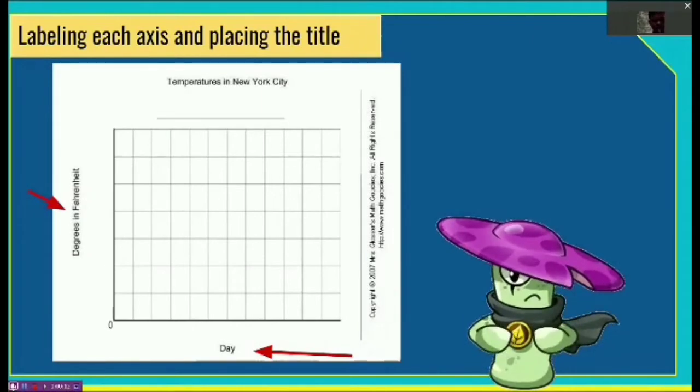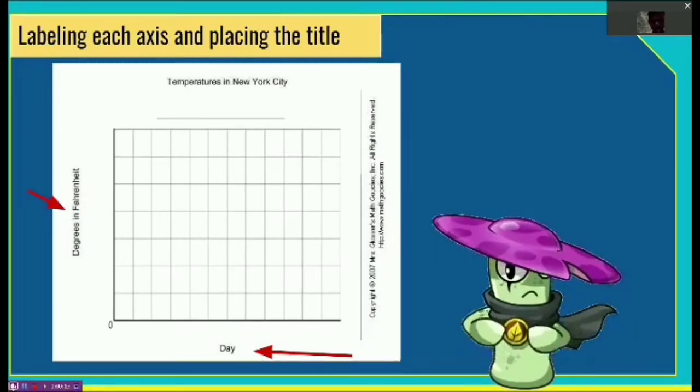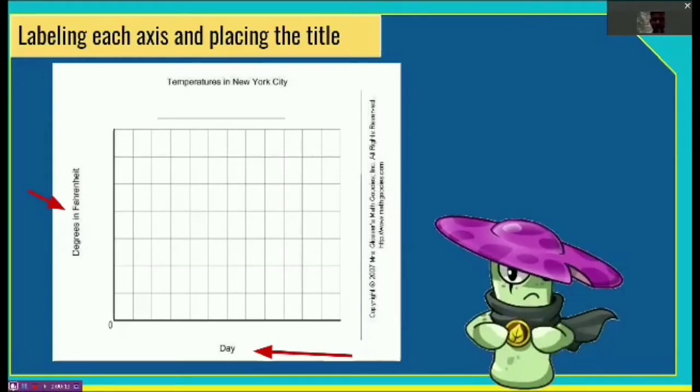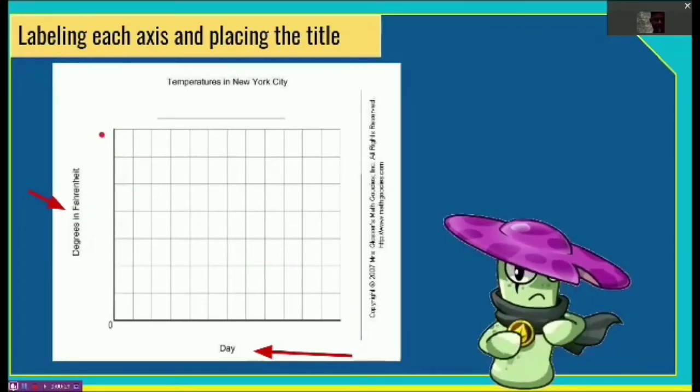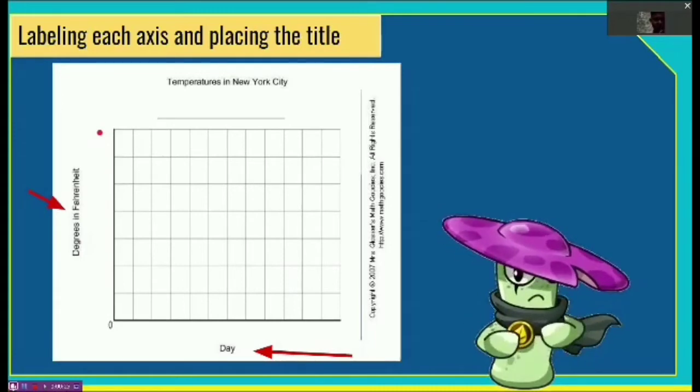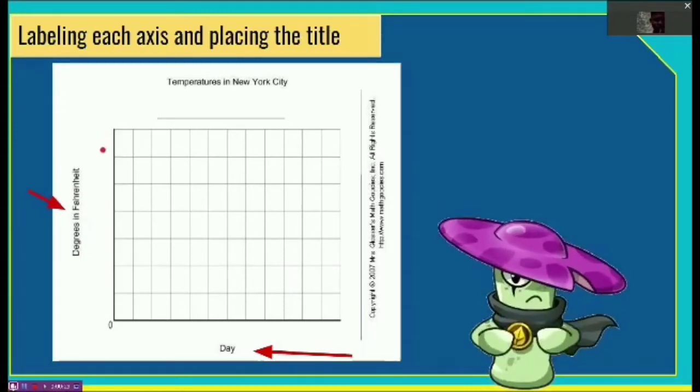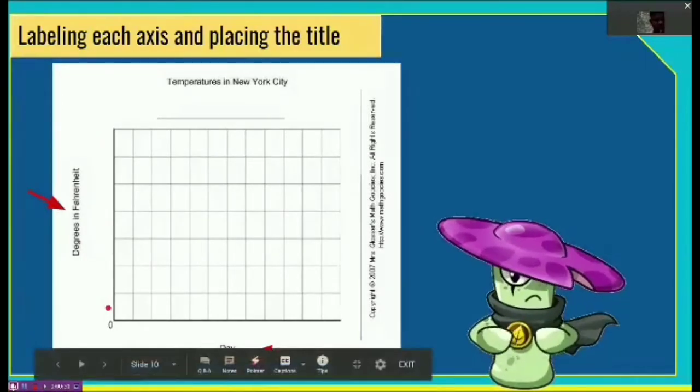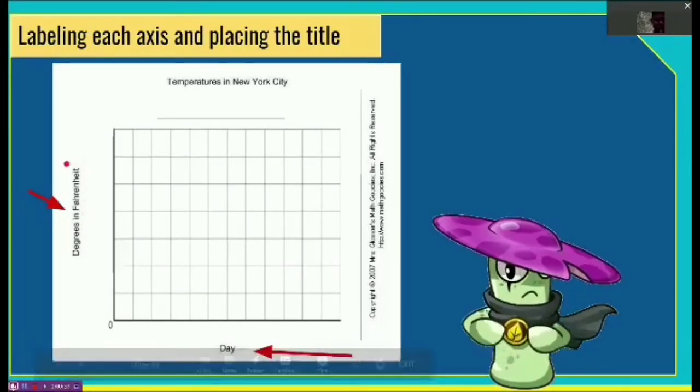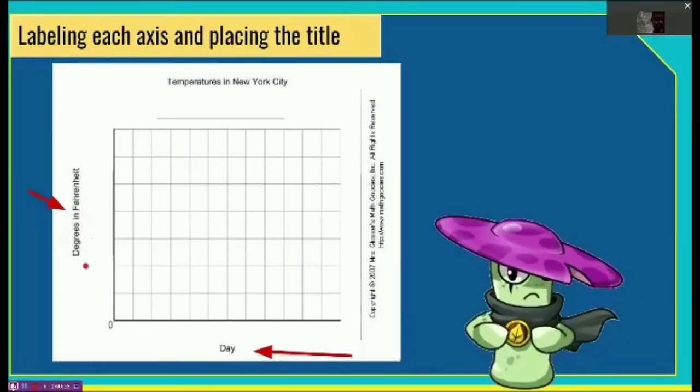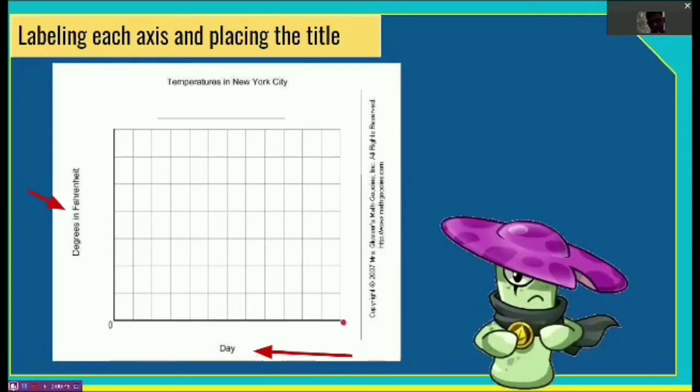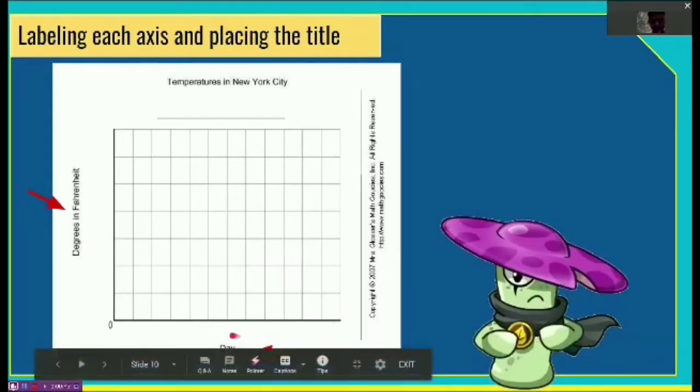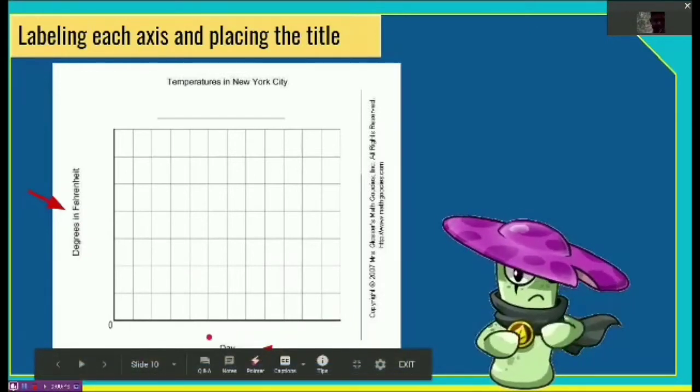In doing such, we should identify which variable the x-axis and y-axis represent. For the y-axis, as shown in my example before, it presented the dependent variables, which were the different temperatures. Now we can label it by putting a title: degrees in Fahrenheit. For the x-axis, which contained the independent variables, which were the days, we also need to put a label, which is the day.